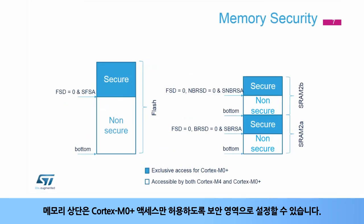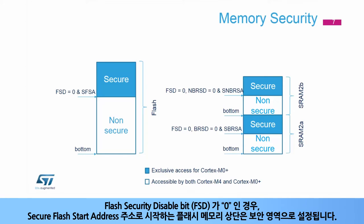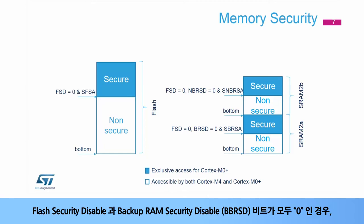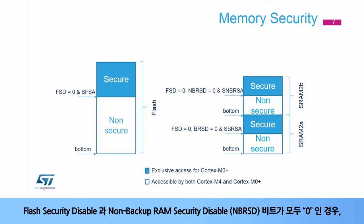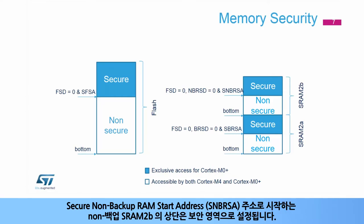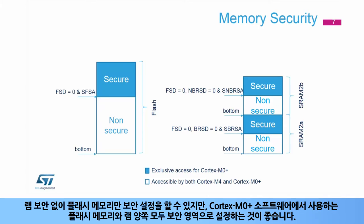The top of the memories can be secured for exclusive Cortex-M0 Plus access. The top of the flash memory, starting from the Secure Flash Start Address, is secure when the Flash Security Disable bit, or FSD, is set to zero. The top of the backup SRAM2A, starting from the Secure Backup RAM Start Address, or SBRSA, is secure when both the Flash Security Disable and Backup RAM Security Disable, or BBRSD bits, are set to zero. The top of the Non-Backup SRAM2B, starting from the Secure Non-Backup RAM Start Address, or SNBRSA, is secure when both the Flash Security Disable and Non-Backup RAM Security Disable, or NBRSD bits, are set to zero.